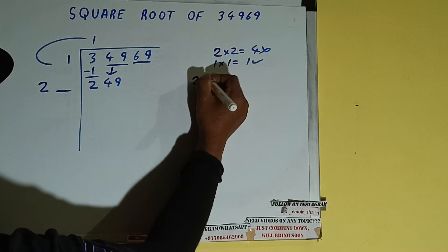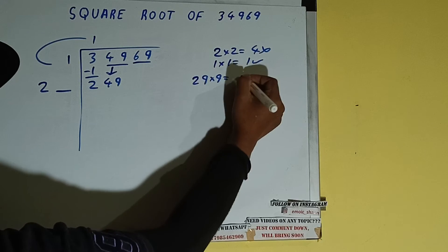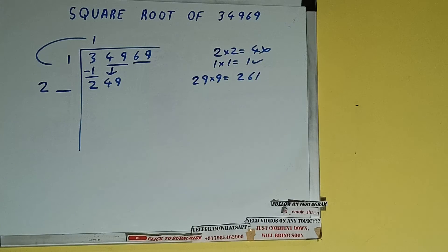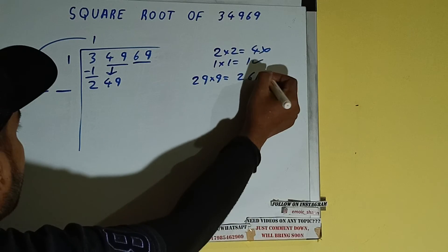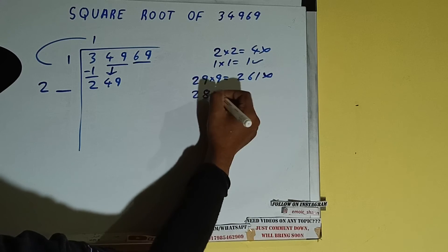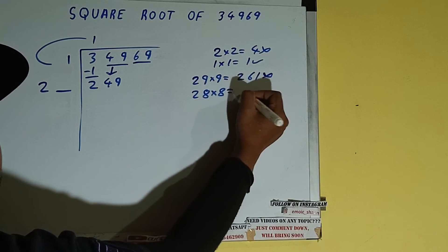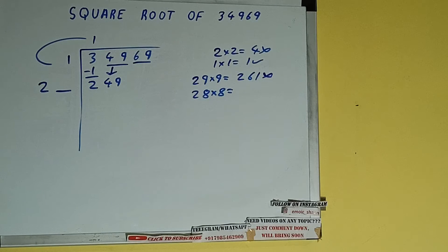So we can try 9 times, that is 29 into 9, and it will be 261 which is bigger than 249, so we cannot use it. We'll be trying 8 times. 28 into 8, and it will be 224 which is good to take.